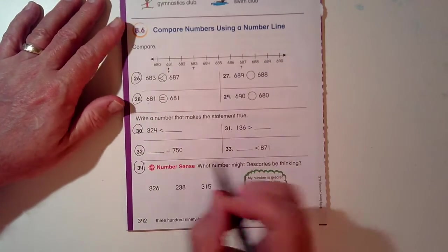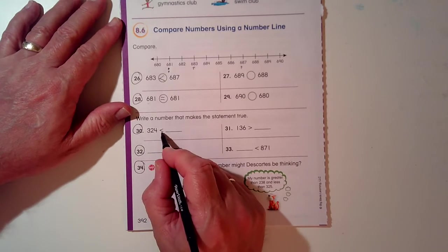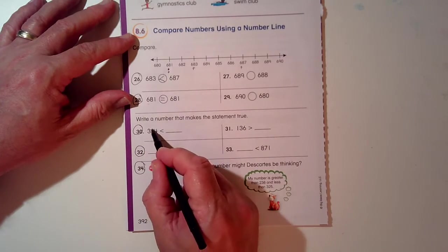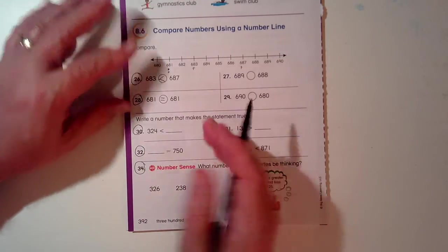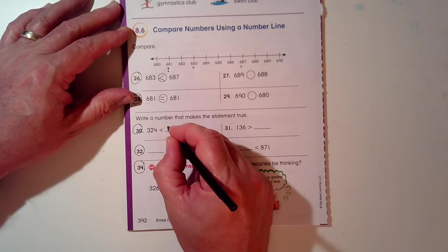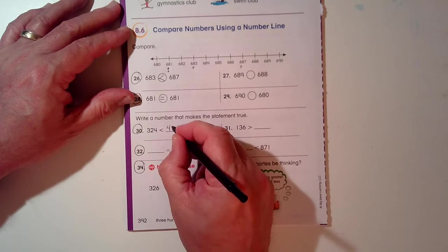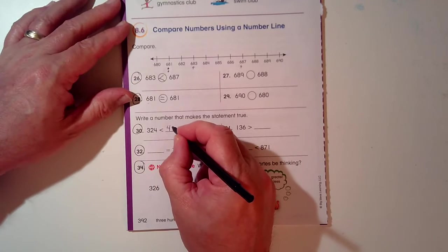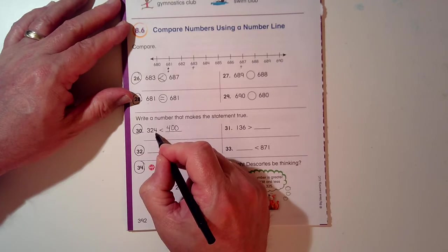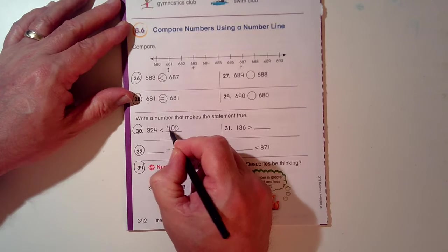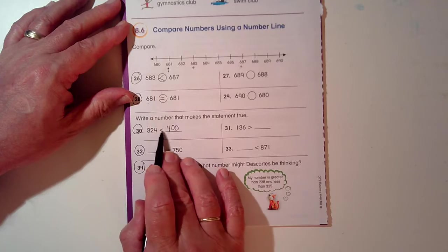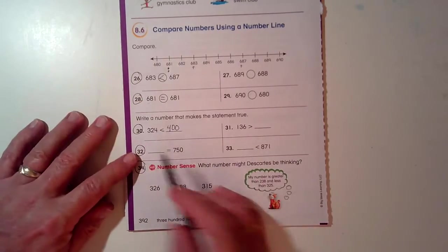Write a number that makes the statement true. So, 324 is less than, all I have to do is make this number bigger, or this number bigger, or this number bigger. It doesn't matter. So I'll start with my 300s and I'll say 400. Then it doesn't matter what I put for the other numbers. A zero and a zero. 324, because this has more hundreds, is less than 400. So when I read it, 324 is less than 400.